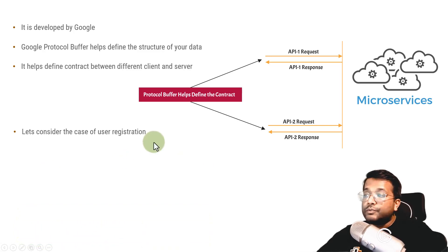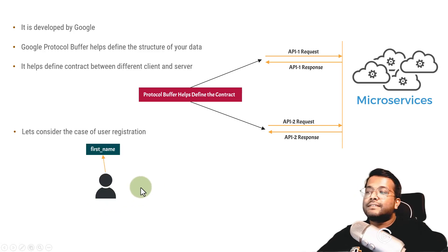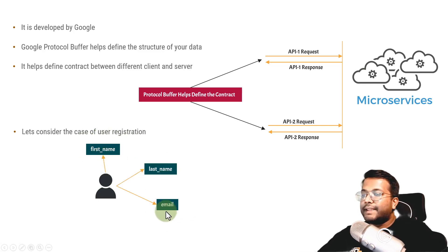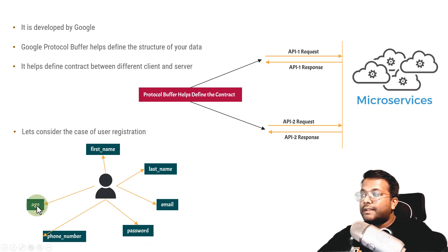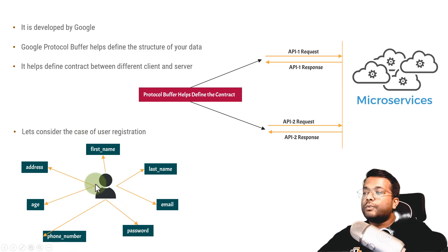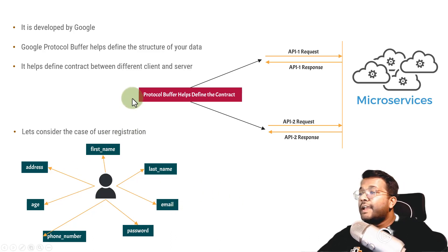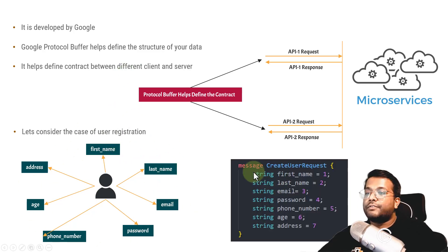Let's take an example of a user registration system. You are trying to create an application where you want to register some users. There is a user with properties associated with it: there can be a first name, last name, email, password, phone number, age, and address. These are different fields you want your user to have, and you also want that whenever a client is calling you, these are the fields they need to provide. Either everything can be mandatory or a few things can be mandatory. Google Protocol Buffer will help you to define this contract or the structure of your data.